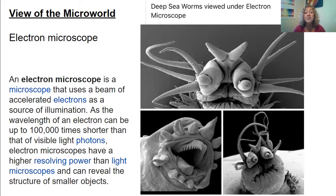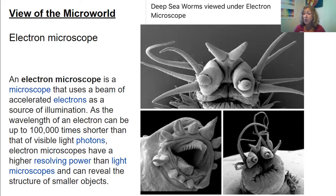An electron microscope is a microscope that uses a beam of electrons as the source of illumination. It can be up to a hundred thousand times shorter than visible light, and so it can reveal the structure of very, very tiny objects and items.